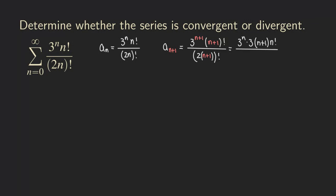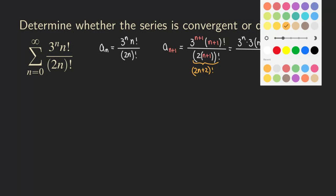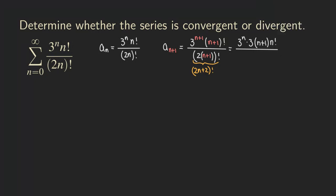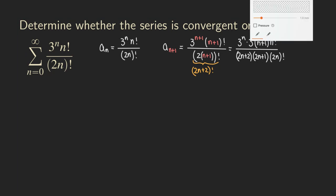For the denominator, we realize 2(n+1) is just 2n+2, so we have (2n+2) factorial. To expand this, we write it as (2n+2) times (2n+1) — that's the next factor — times (2n) factorial.